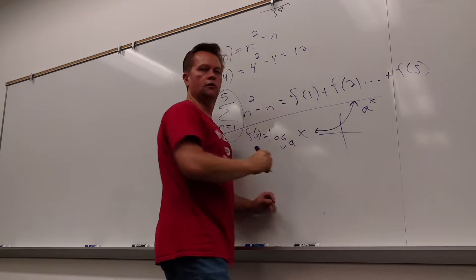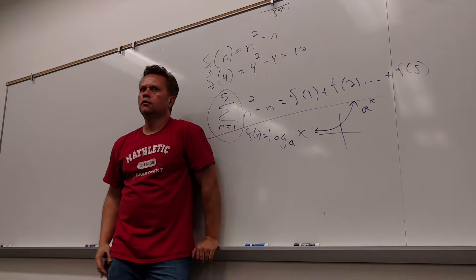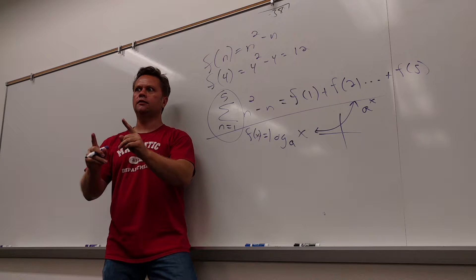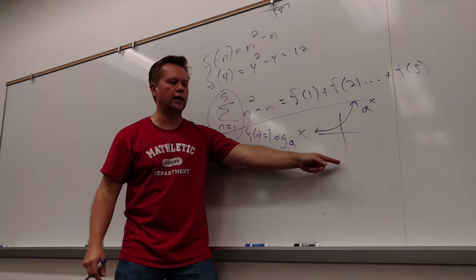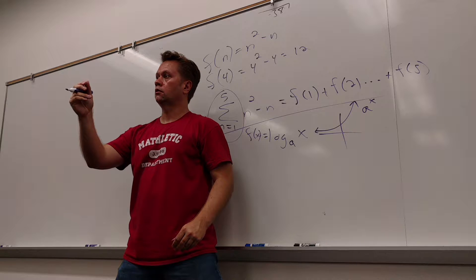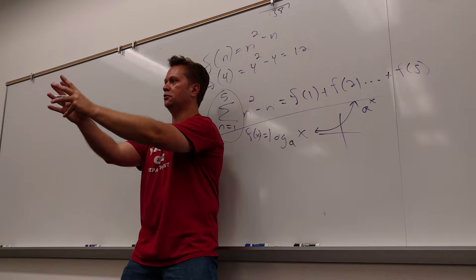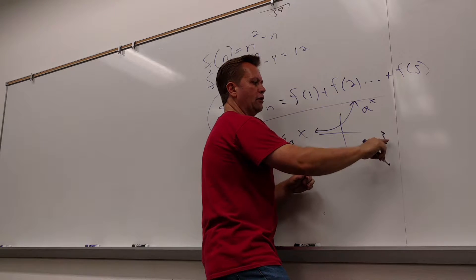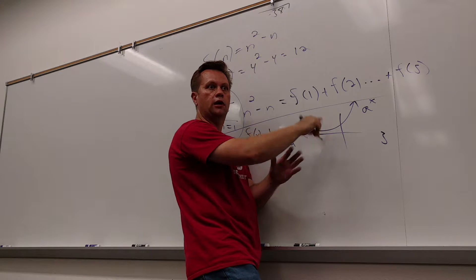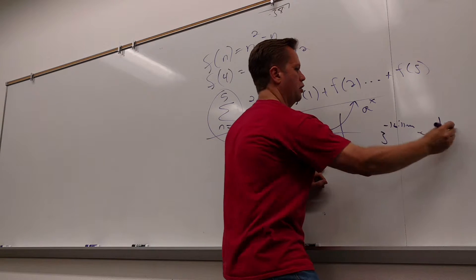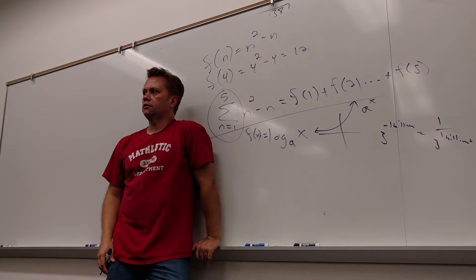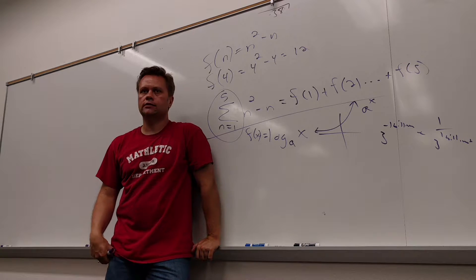That looks like this. Does it go below the x-axis? Why not — why can't I have negative outputs? I cannot raise 3 to a power and make it negative. I can't even raise 3 to a power and make it 0. That's why there's an asymptote there. If I raise 3 to the negative 1 billionth, that is 1 over 3 to the 1 billionth — which is not 0, it's bigger than 0. As a human I would say that's 0, but it ain't 0.